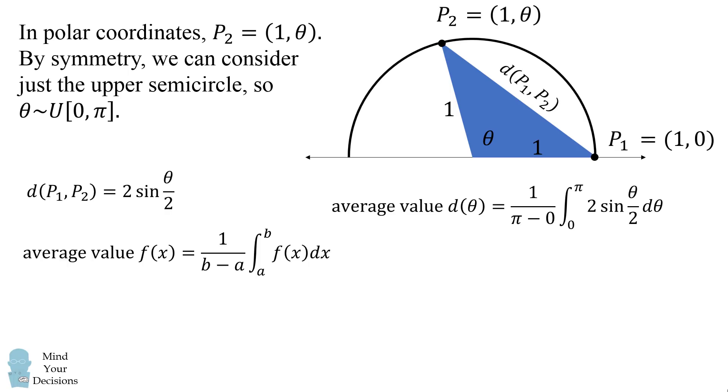Our interval will be between 0 and pi. So we have 1 over pi minus 0. And then we want the integral from 0 to pi of 2 times the sine of theta over 2 d theta. It's a straightforward exercise to calculate this integral. We take 1 over pi times negative 4 cosine of theta over 2 evaluated from 0 to pi. And that gets us to our answer of 4 over pi. And that's approximately 1.27. Did you figure it out?